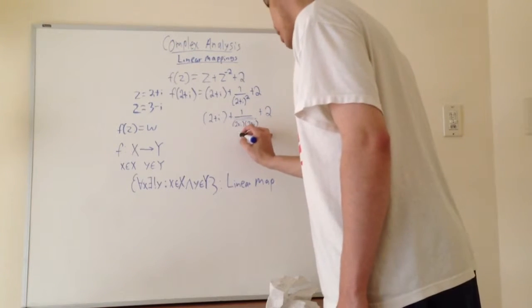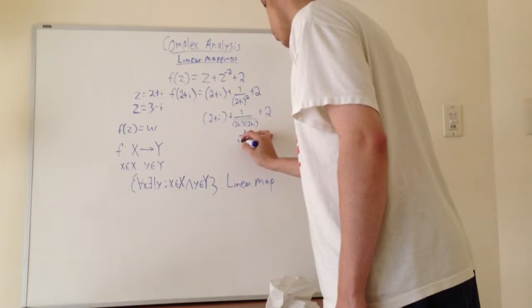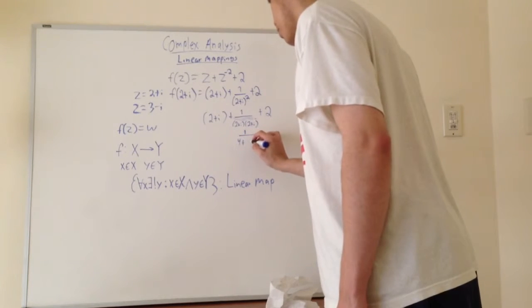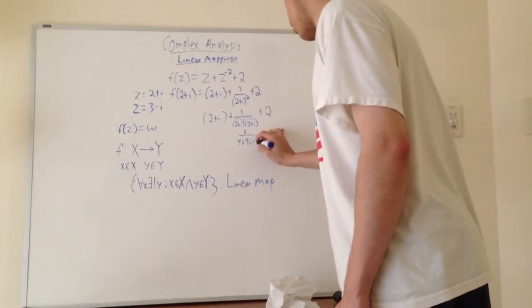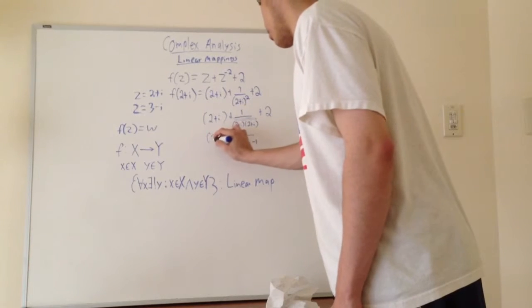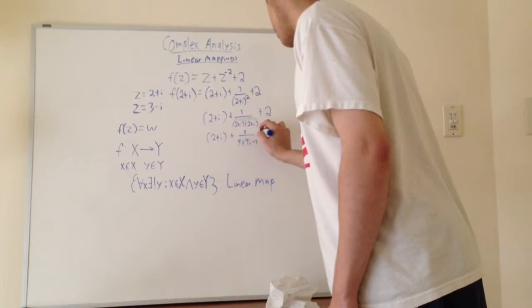So here we're going to have 1 over 4, and we're going to have plus 2i plus 2i, which is 4i, plus i squared, which is just equal to negative 1. So we're going to have this, and we're going to have this plus 2.